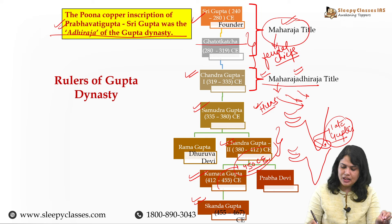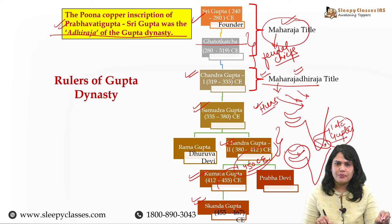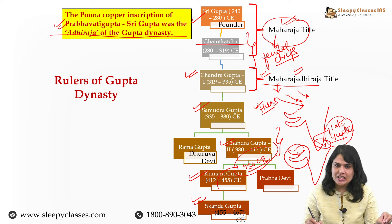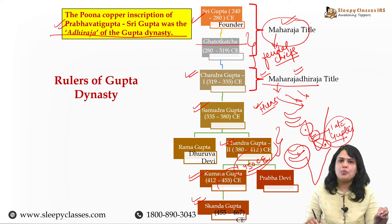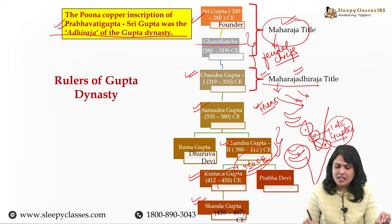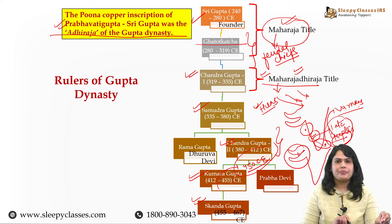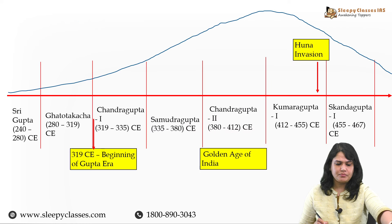Guptas ka decline 450 CE ke aaspaas shuru hua, their power lingered till about a hundred more years, and around 550 CE aap dekhenge ki Guptas woh confined ho gaye the area of eastern UP and Bihar, with Pataliputra as their capital - they are known as later or late Guptas. Aur erstwhile jo Gupta empire hai, uske upar humein kaafi regional powers dekhne ko milenge. For example, the Vallabhis of Gujarat, where the Maitraka dynasty rule kar rahi thi; Maukharis of Kannauj; Pushyabhuti dynasty in Sthaneshwar in Haryana; and in the Brahmaputra valley, Varmans. So this is the story in brief.